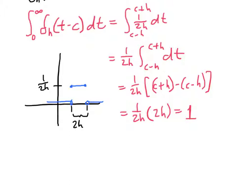So all this integral is really showing us is that area, that being the area underneath this thing right here, where area is just length times width, and 1 over 2h times h is 1.